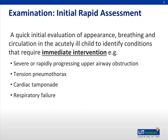In the examination of an acutely sick child in respiratory distress, do an initial rapid assessment to quickly identify life-threatening conditions, which will require immediate and aggressive interventions to stabilize the child prior to a complete history and physical examination. This includes severe or rapidly progressing upper airway obstruction, tension pneumothorax, cardiac tamponade, and respiratory failure.